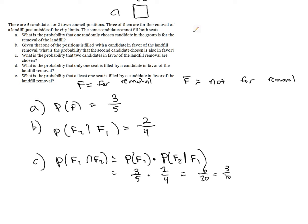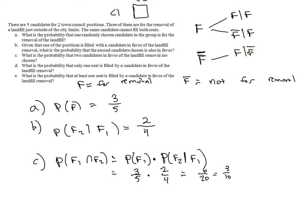I'm going to build a probability tree. The first candidate can be in favor or not in favor. If the first candidate is in favor, then the second candidate can be in favor or not in favor, given that the first was in favor. Similarly, if the first candidate was not in favor, the second candidate may be in favor or may not be. You can write this as F, F-bar, F, F-bar — the conditional notation just emphasizes it's conditional upon the first person having been selected.